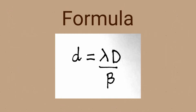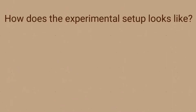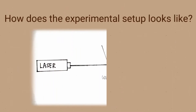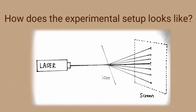Now look at the experimental setup. Here we have three major components: the laser, the wire, and the screen. When light from the laser hits the wire, it gets diffracted and the diffraction pattern is obtained on the screen.